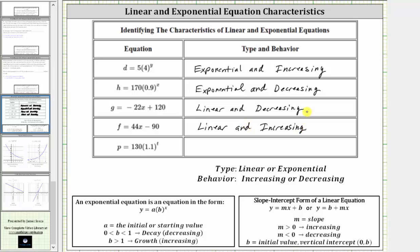And then finally we have p equals 130 times 1.1 raised to the power of t. Because the variable t is in the position of the exponent, this is an exponential equation. Because the base is 1.1, which is greater than one, we have exponential growth, and the behavior is increasing. I hope you found this helpful.